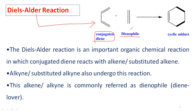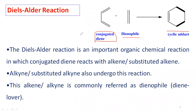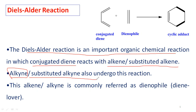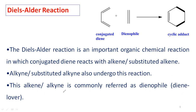The dienophile may be an alkene or alkyne, or even substituted alkenes or substituted alkynes. Commonly, alkenes or alkynes are used as the dienophile component — they act as diene lovers. 'Dieno' means diene, and 'philic' means loving nature.